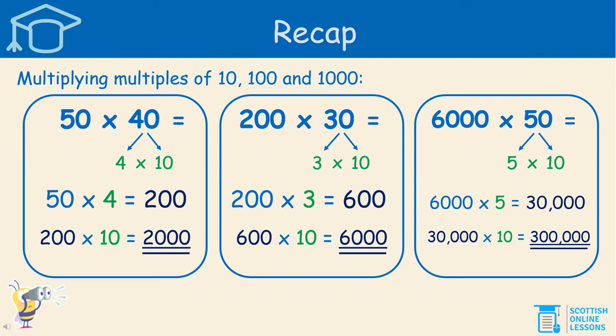Before we begin, I'd like to recap on multiplying multiples of 10, 100 and 1000. Multiples of 10: 10, 20, 30, 40, 50, 60, and so on. Multiples of 100: 100, 200, 300. Multiples of 1000: 1000, 2000, 3000, 4000, and all the way up. If you have a look at the box on the left there, we are multiplying a multiple of 10 by a multiple of 10 — 50 times 40.